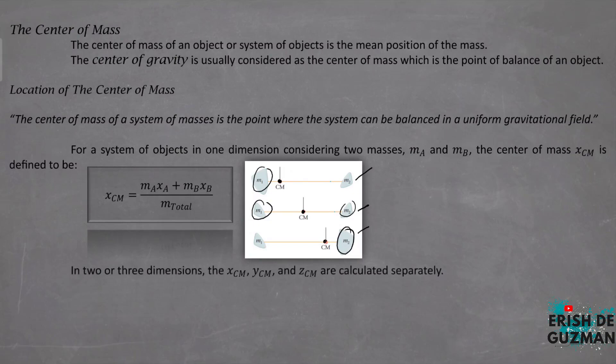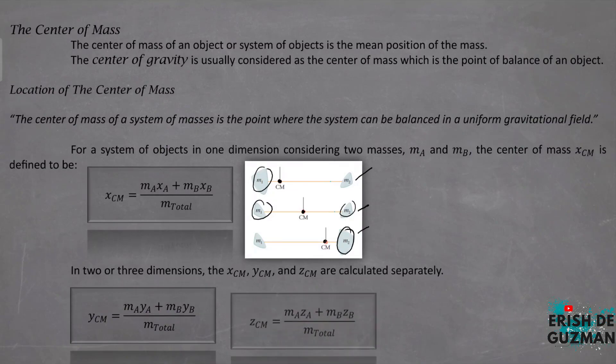In 2 or 3 dimensions, we have x_cm, y_cm for the vertical axis, and z_cm if the system is 3-dimensional. The formula remains the same for each axis.